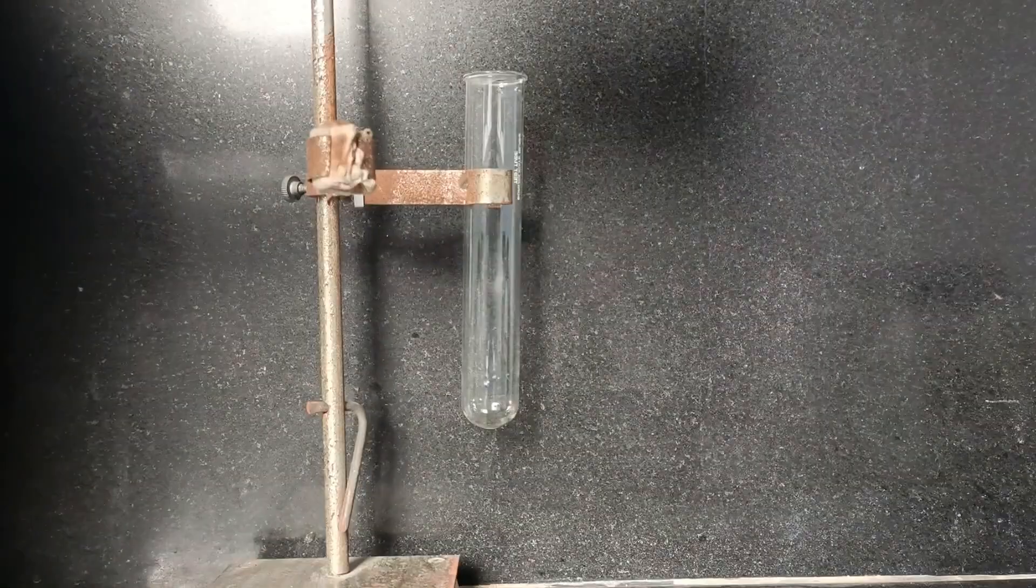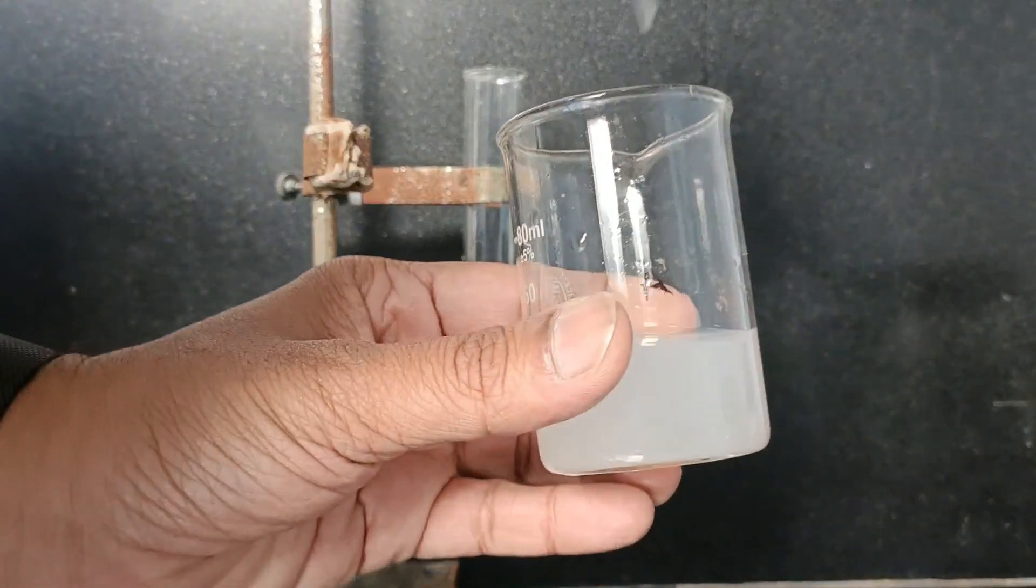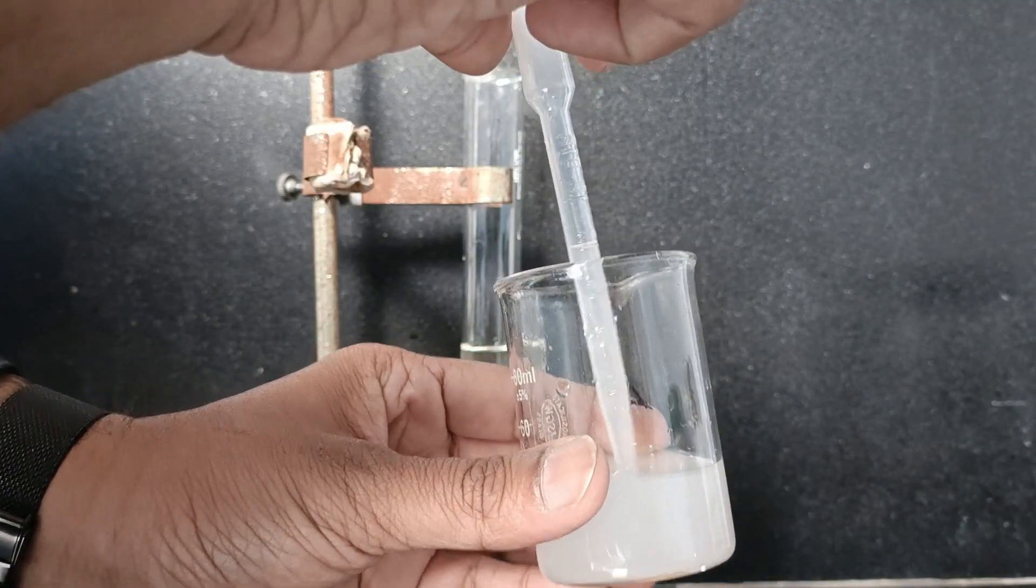I am going to take some amount of potassium hydroxide solution in a test tube. With the help of a dropper, I am going to take some calcium chloride solution and add it into the potassium hydroxide solution.